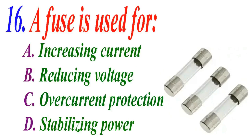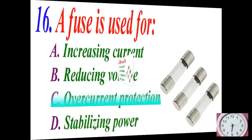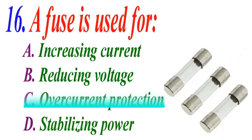A fuse is used for: A increasing current, B reducing voltage, C over current protection, D stabilizing power. The correct answer is C over current protection.